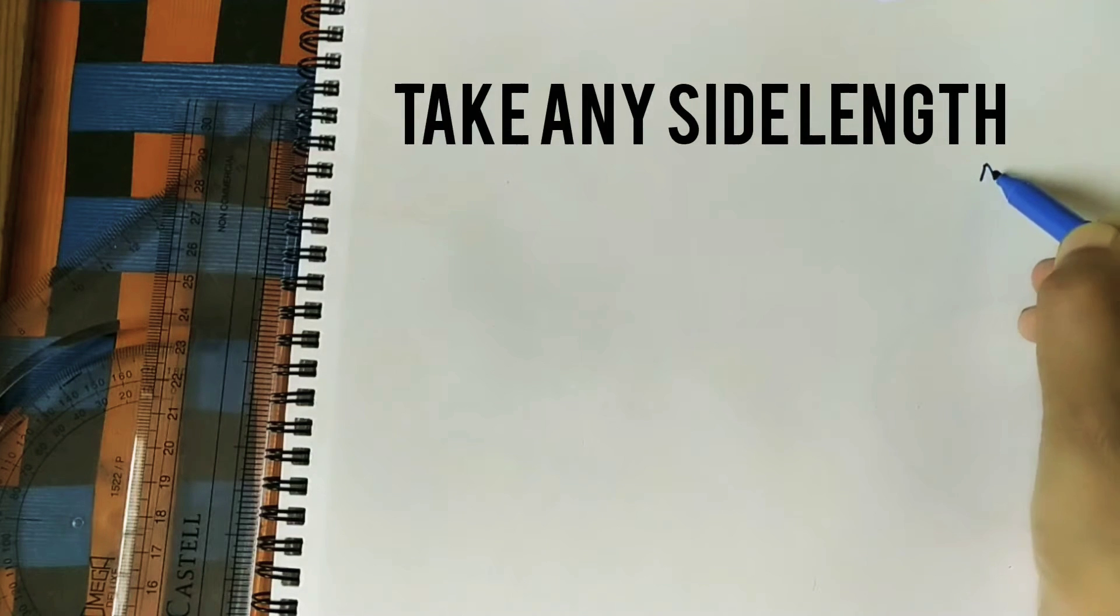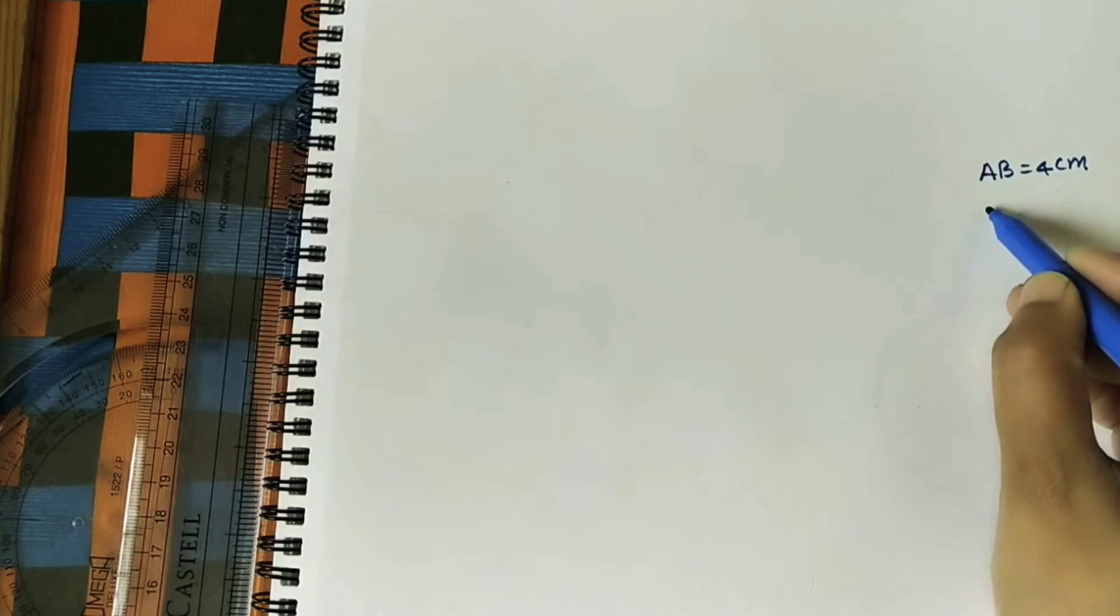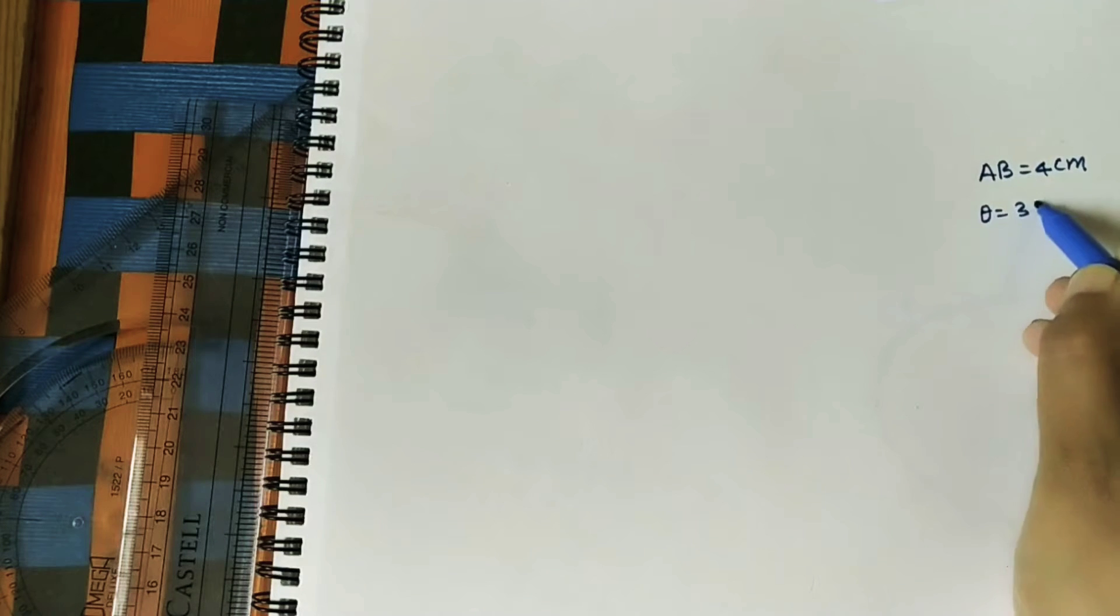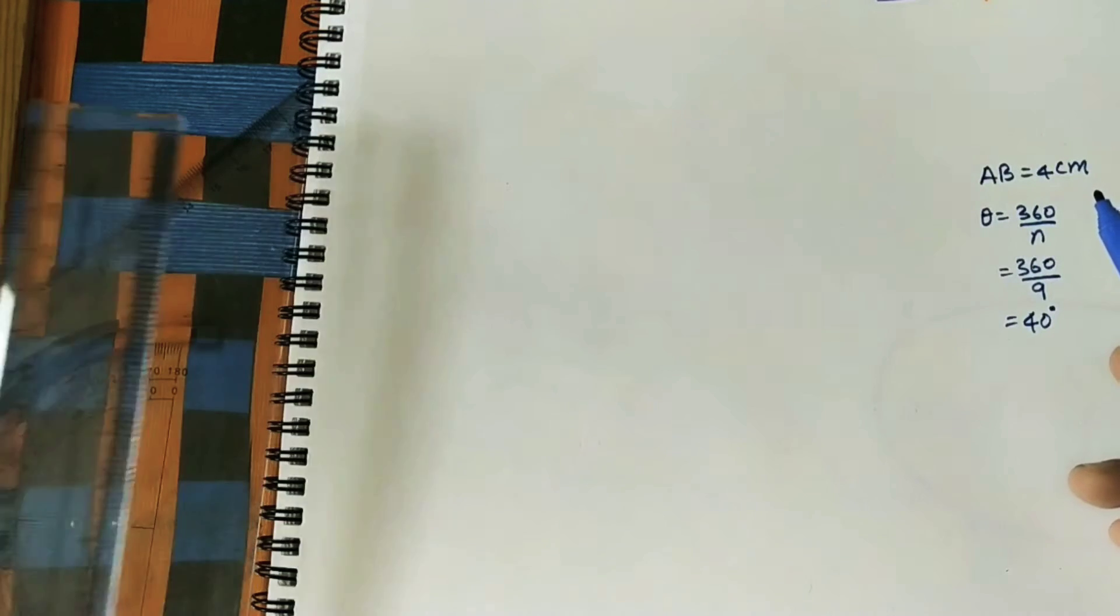Take any one length of the nanagon, AB is equal to 4 centimeter. Now I am using for doing quick polygon outer angle formula. Let us take it is 360 by n, so here n is number of sides of the taken polygon. In our case we are taking nanagon, 360 by 9, so it is 40 degrees. So outer angle is 40 degrees.